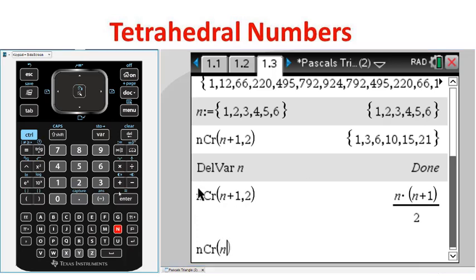Students will need to be careful that they have the correct row and diagonal before simplifying the combinatorics.